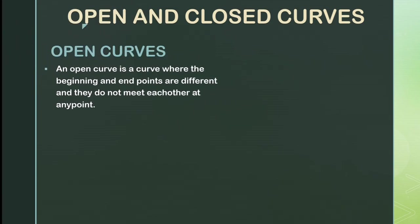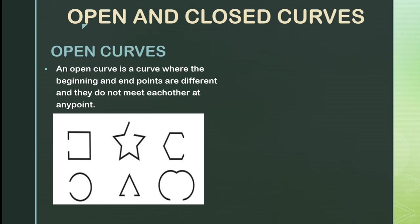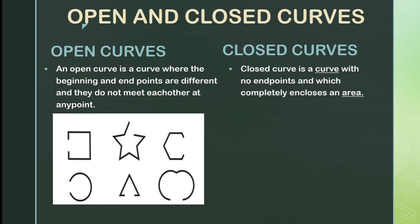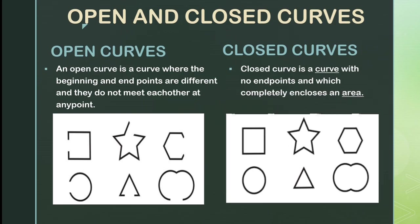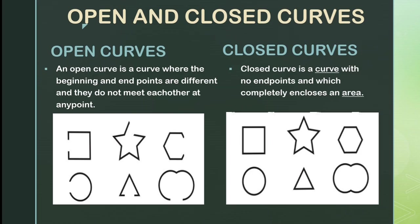Open and closed curves. An open curve is a curve where the beginning and the end points are different and they do not meet each other at any point. In none of the figures do the starting point and the end point meet each other. All the figures have different starting points and different end points. Now, closed curves: a closed curve is a curve with no end points which completely encloses an area. Closed curves are complete figures — you cannot identify which is the starting point and which is the end point. Such figures are called closed curves.